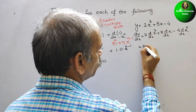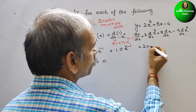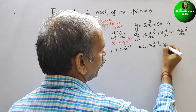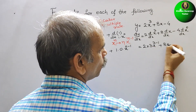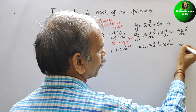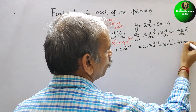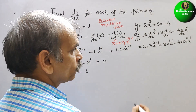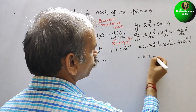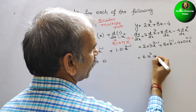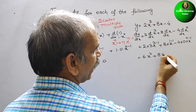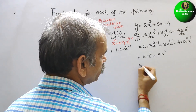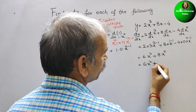This will be equal to 2 into 3·x^(3-1) plus 8 into x^(1-1) minus 4 into 0 into x^(0-1). So therefore it will be 6x² plus 8 into x to the power of 0, and this will be 0. So this is equal to 6x² + 8.